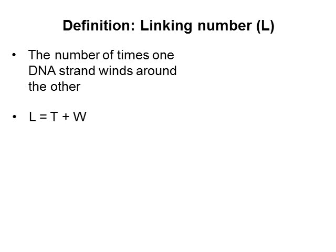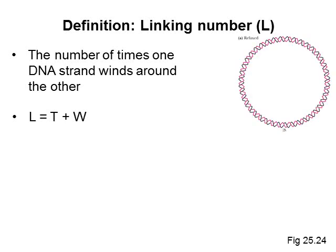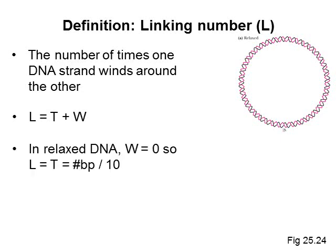Let's take a simple case of relaxed circular DNA. When we say DNA is relaxed, we mean that it has no writhe and there is no tension in its twist. So for relaxed DNA, writhe equals zero, so the linking number is equal to the twist, which we normally assume to be 10 base pairs per turn.